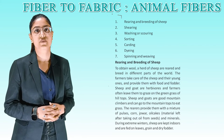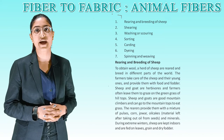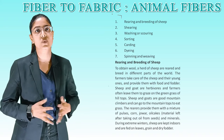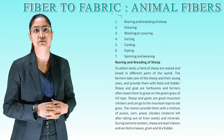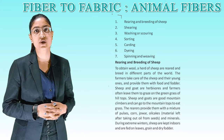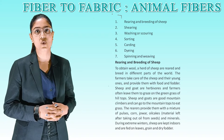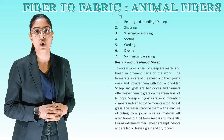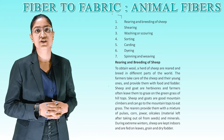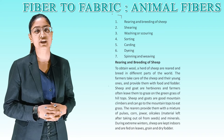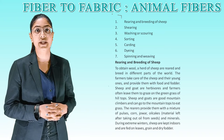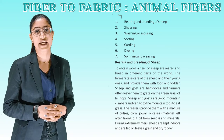Rearing and breeding of sheep: to obtain wool, a herd of sheep are reared and bred in different parts of the world. Farmers take care of the sheep and their young ones, providing them with food and fodder. Sheep and goats are herbivorous and are often left to graze on green grass at hilltops. The rearers provide them with a mixture of pulses, corn, jowar, oil cakes, and minerals. During extreme winters, sheep are kept indoors and fed on leaves, grains, and dry food.